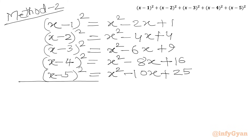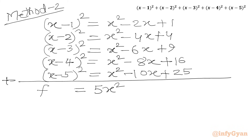Now we will add all the expanded terms. Summing the x² terms gives 5x². Summing the x-coefficients: 2+4+6+8+10 = 30, so we get -30x. Summing the constants: 1+4+9+16+25 = 55. So f(x) = 5x² - 30x + 55.